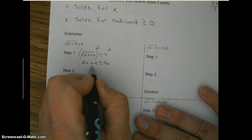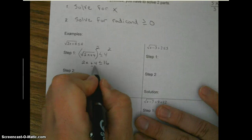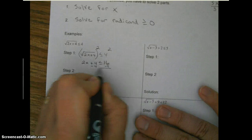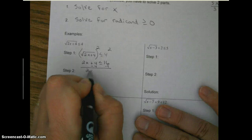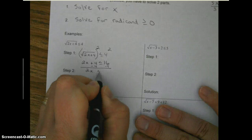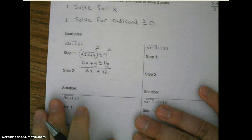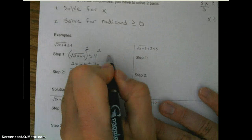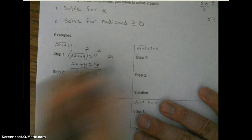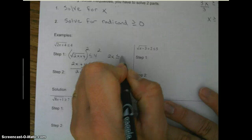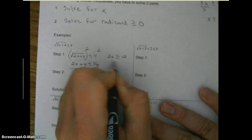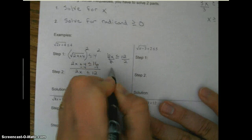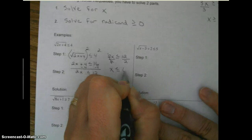Continue to solve. Subtract 4. 2x is less than or equal to 12. Divide by 2. x is less than or equal to 6.